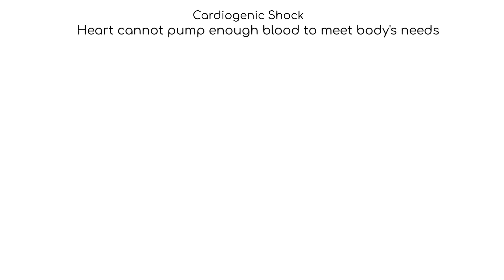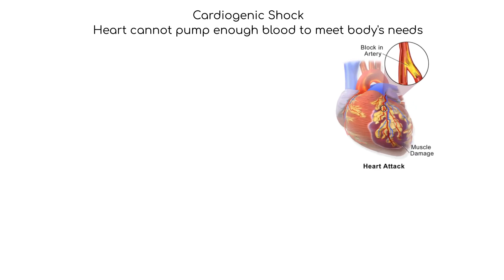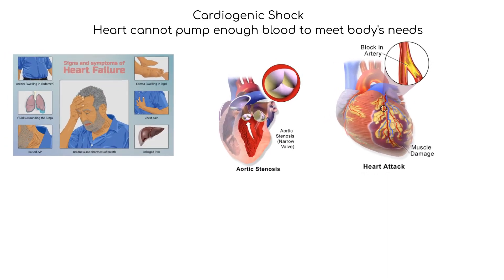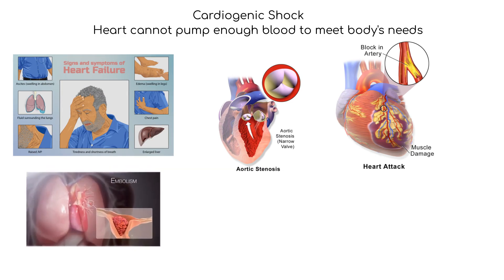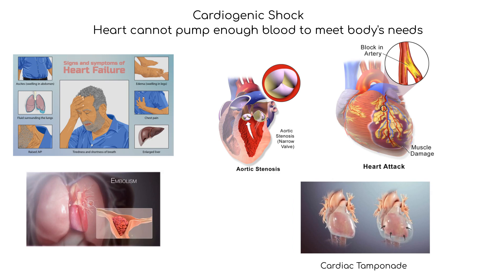Types of shock. Cardiogenic shock occurs when the heart cannot pump enough blood to meet the body's needs. It can be caused by a heart attack, severe heart failure, valvular dysfunction, ventricular or septal rupture, infections, pulmonary embolism, cardiac tamponade, and drugs.